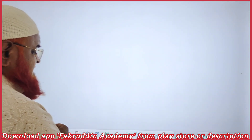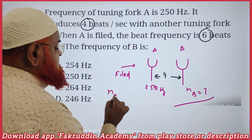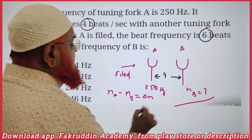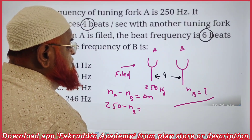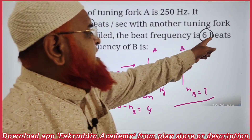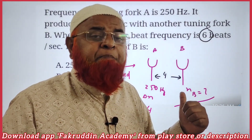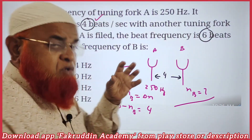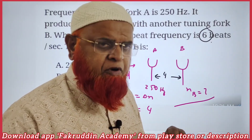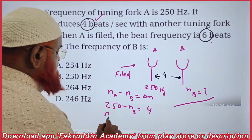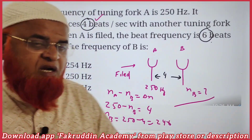It is now clear that A is greater. So NA minus NB equals delta N. NA is given as 250, NB is unknown, and delta N is four beats. The six-beat data is given only to judge which tuning fork is larger — it is not used to solve the problem. You use only the four beats to solve it. Therefore, NB equals 250 minus 4, which gives 246. The answer is 246, making option D the correct choice.